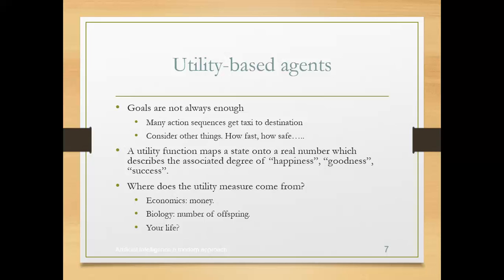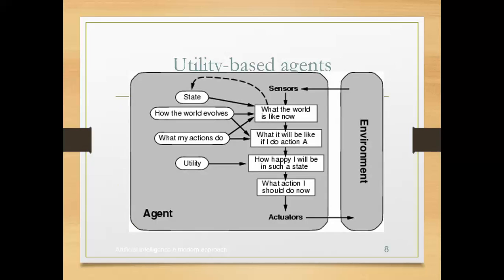Now let us come to utility-based agents. Through sensors, I am perceiving inputs from the environment. After processing that input, I perform actions to the environment. But an additional consideration is: how happy am I after performing that action? That type of agent, which evaluates happiness or satisfaction after acting, we are calling utility-based agents.